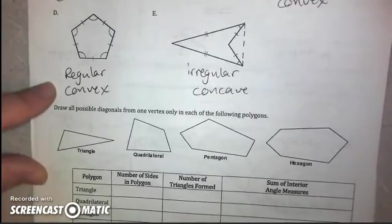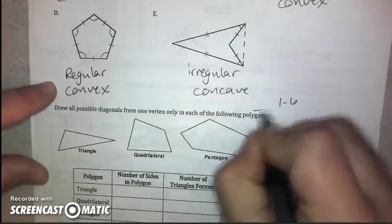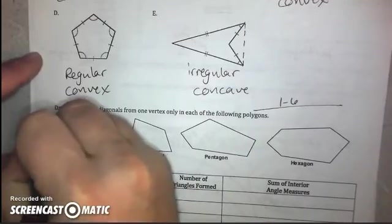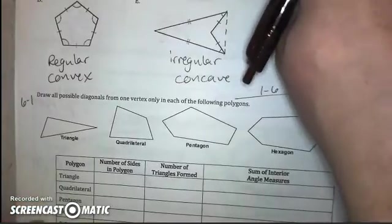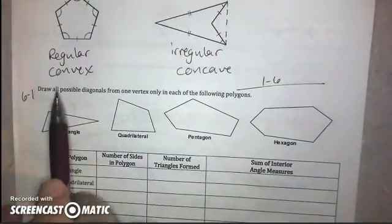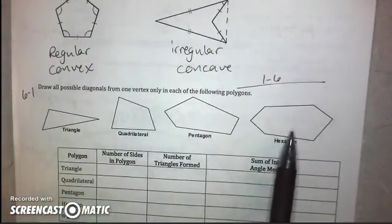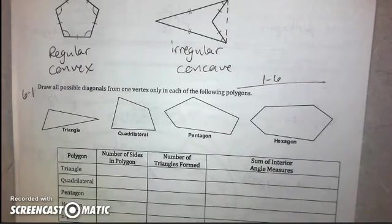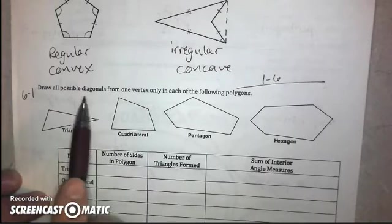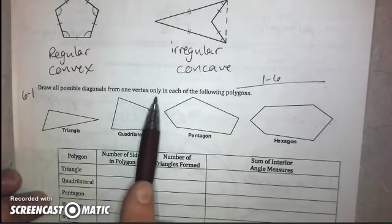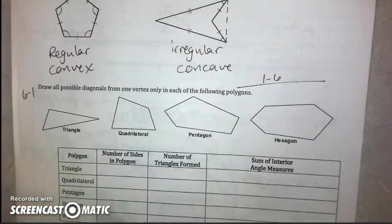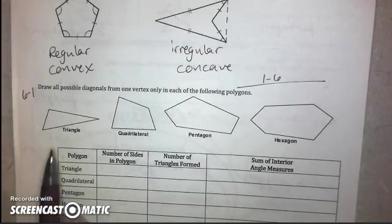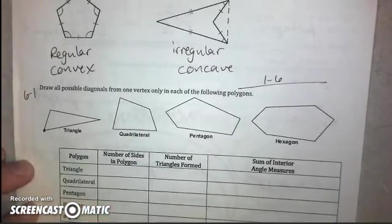This is really where the information from Lesson 1-6 stops. Now, we are in Lesson 6-1, when we start to talk about the angles formed by polygons. So, what I want you to have done here, and some of you have started to do this, and I know some of you are going to need to correct what you've done, so make sure you're ready to do that. If we're going to draw all possible diagonals from one vertex only in each of the following polygons, that means we're going to pick a vertex.